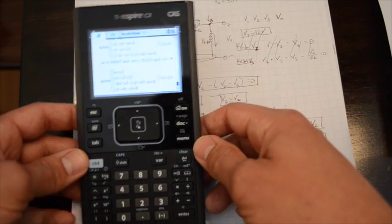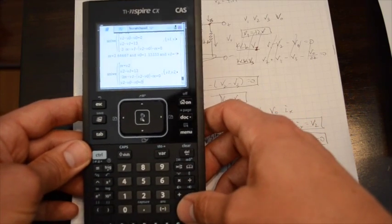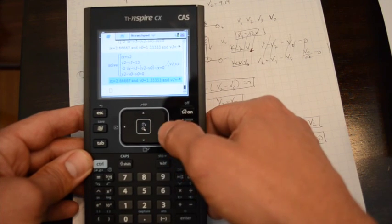I like it to give them approximate values. So I just press control enter, and boom. There you have your answers.